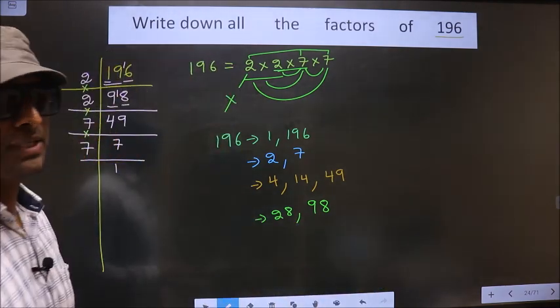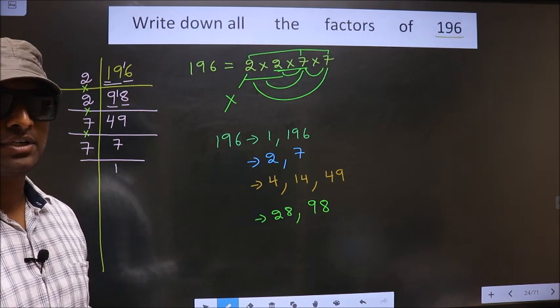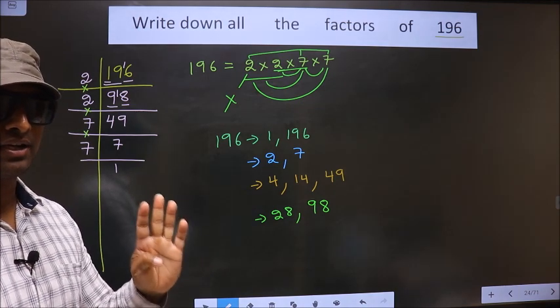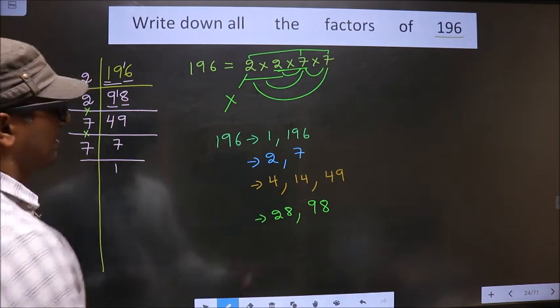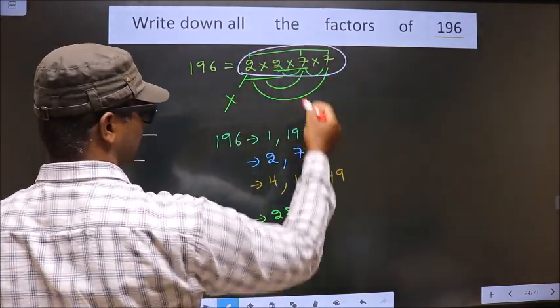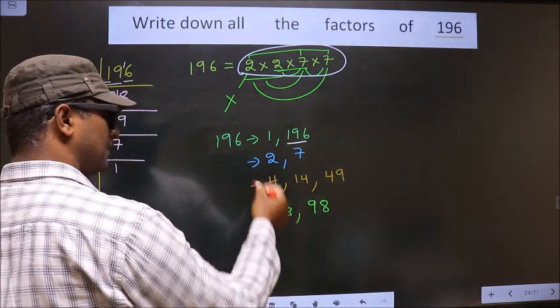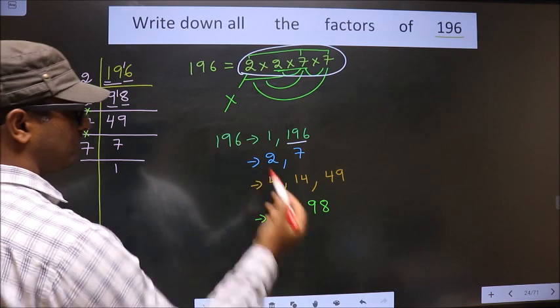Now you leave this 2. Take a combination of 4 numbers. Here we have 4 numbers only. So if we take all the 4 numbers we get 196 itself. Thus these are all the factors of 196.